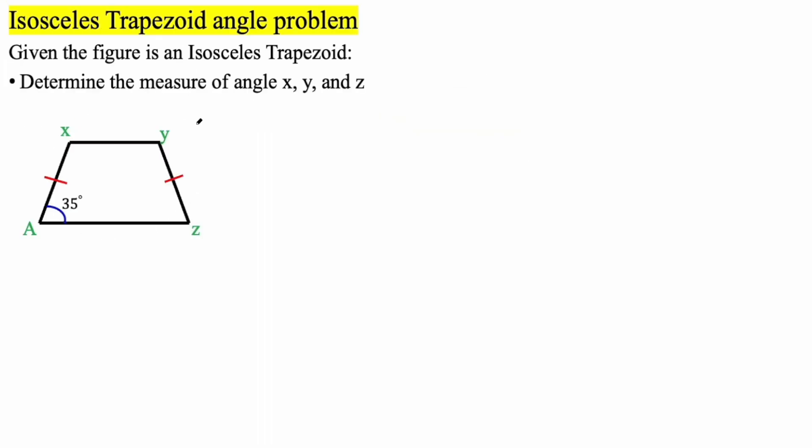With that said, we're given this figure right here, and they tell us it's an isosceles trapezoid. You want to figure out the measure of angle X, Y, and Z. So we're just applying that definition.